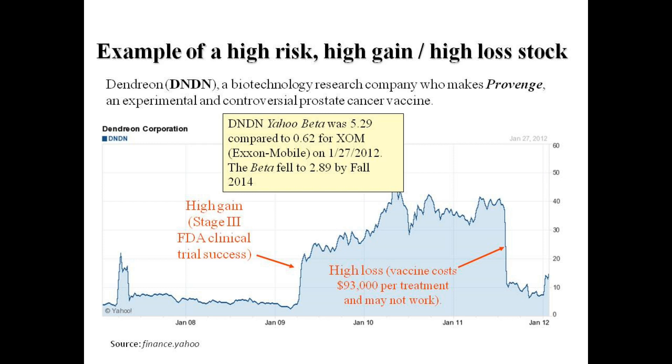Here's an example I have always used of a very high risk, high beta stock. This is Dendreon, a biotech stock that lived or died by their success in trials for the drug Provenge. The beta for this stock in 2012 was an astonishing 5.29 compared to 0.62 for Exxon Mobil. By fall of 2014, the beta had fallen to 2.89, but a beta above 1 implies that this stock is much more volatile than the S&P 500. A beta of 0.62 implies that Exxon Mobil is far less volatile than the S&P 500.